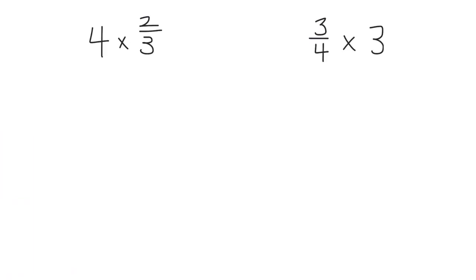We're going to start with repeated addition. Let's start by looking at 4 times 2/3, and I want you to think of this as four copies of 2/3. So 4 times 2/3 can be represented using repeated addition as 2/3 plus 2/3 plus 2/3 plus 2/3.